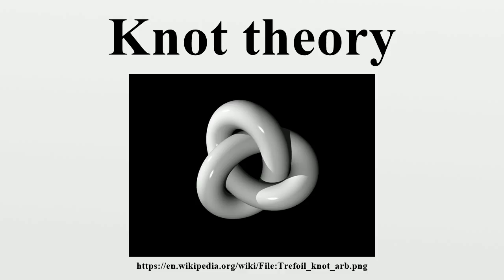Tait, in 1885, published a table of knots with up to ten crossings, and what came to be known as the Tait Conjectures. This work motivated the early knot theorists, but knot theory eventually became part of the emerging subject of topology. Topologists in the early part of the 20th century, including Max Dehn, developed the main approach to knot theory until a series of breakthroughs transformed the subject.